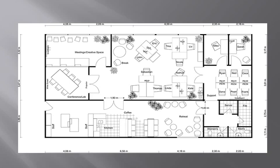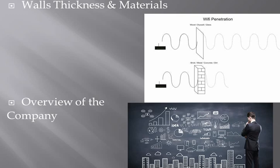But before thinking of the brand of the infrastructure, or equipment, or the number of them, there are some questions that you should ask from the president of the company. What are those critical questions? The first thing is wall thickness and materials.